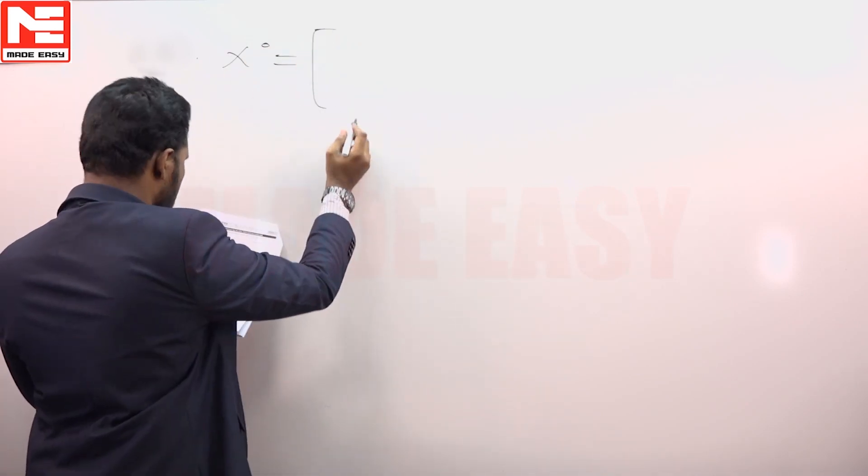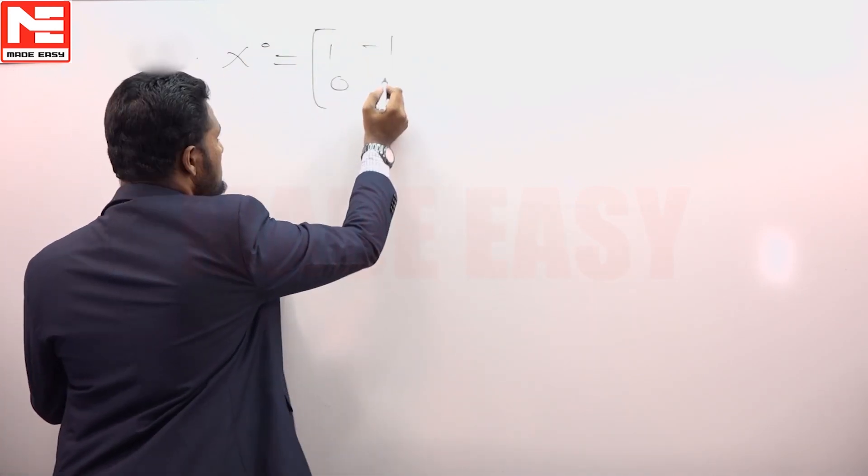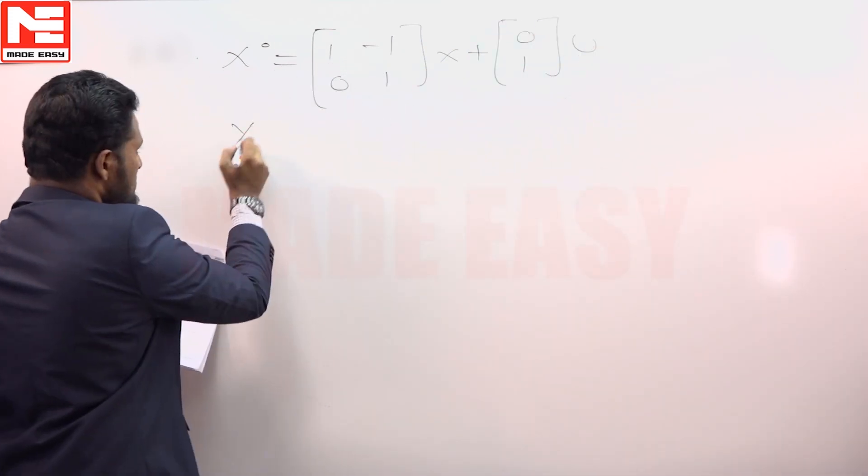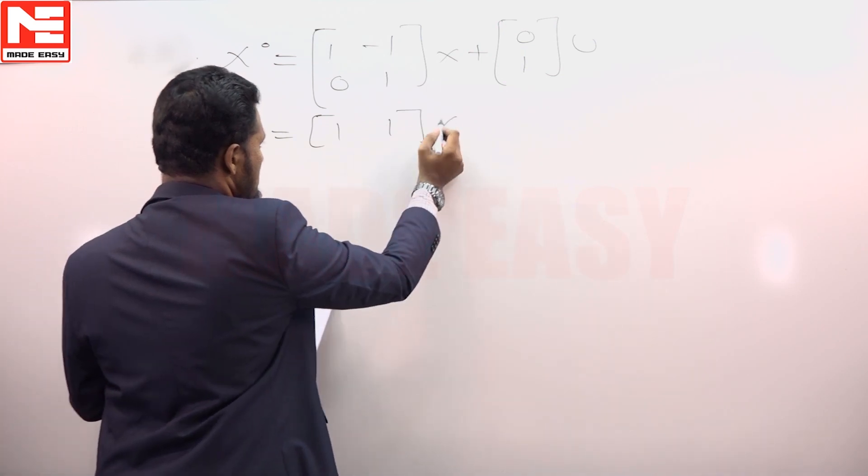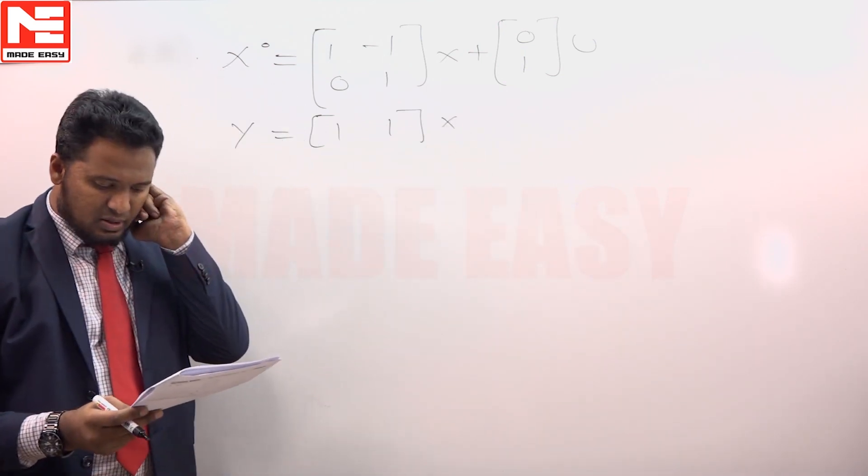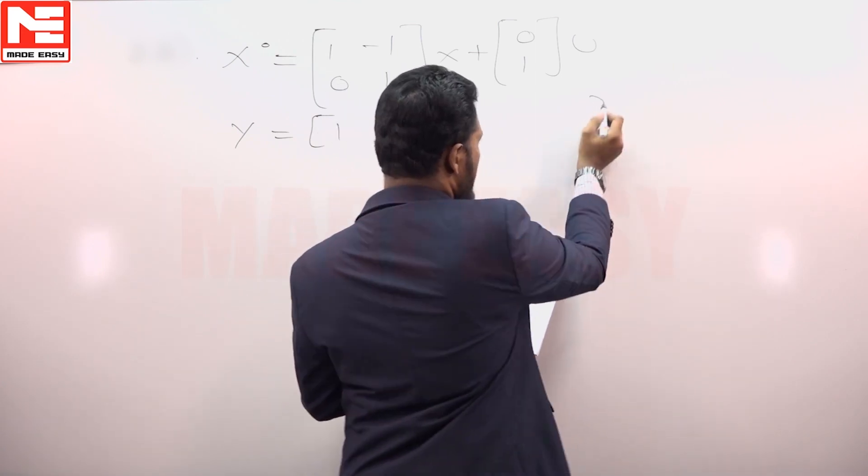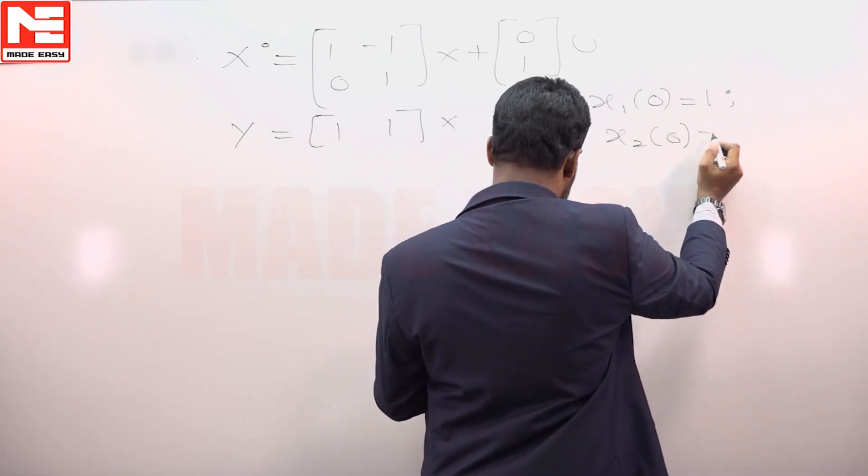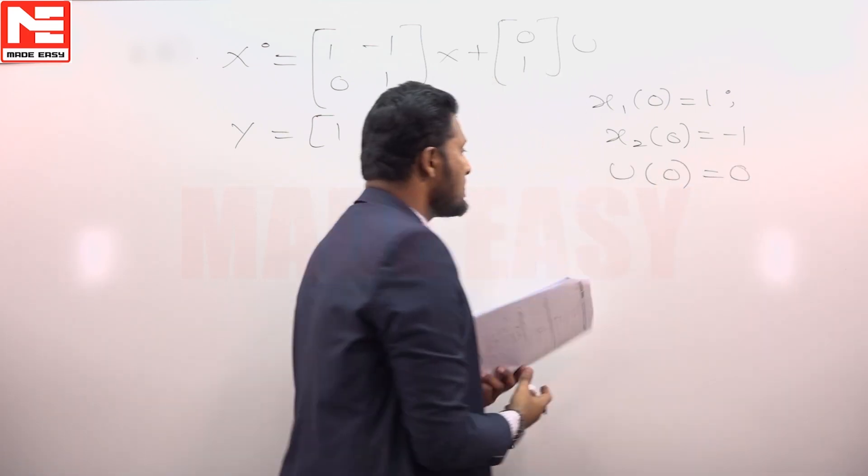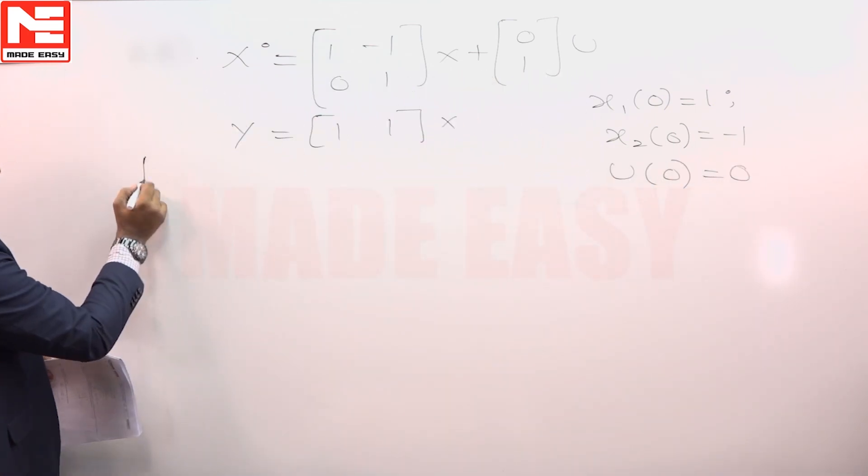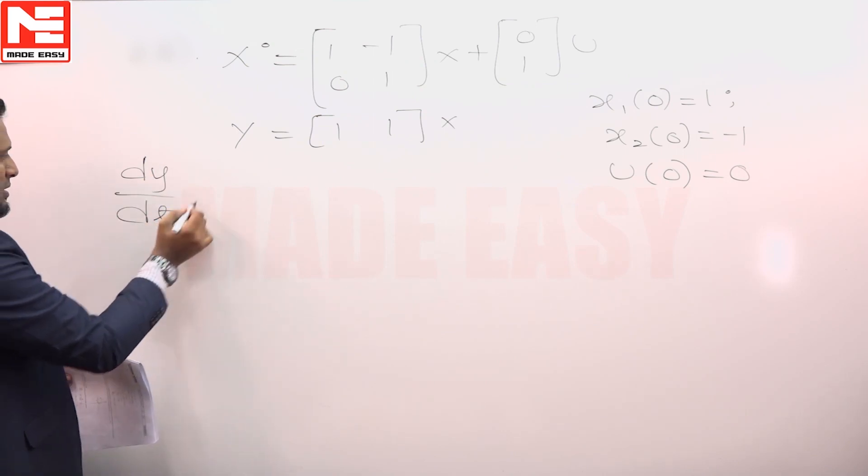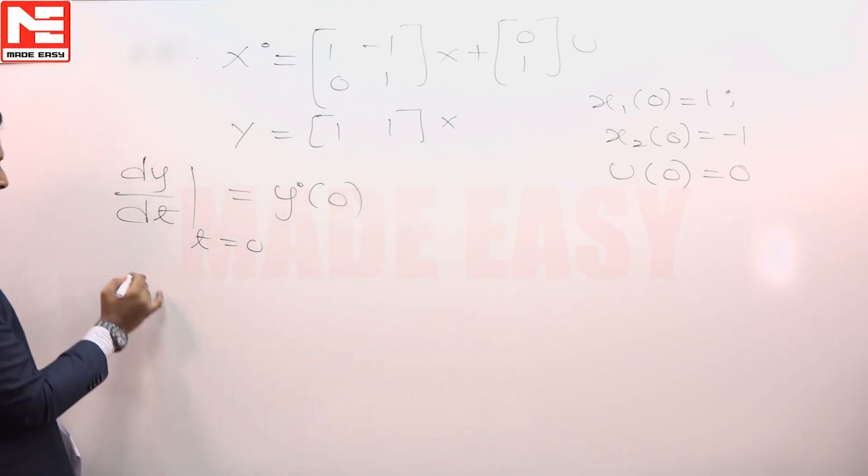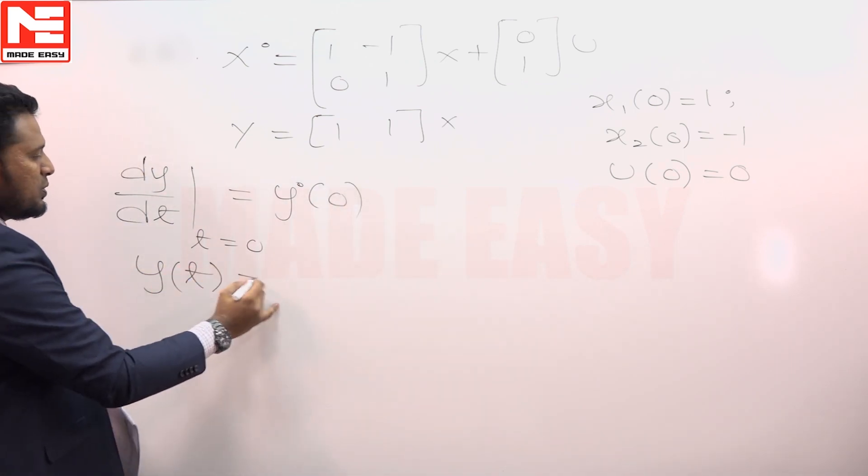State model representation of a system is given. The question is to find dy by dt. It is given that x10 is 1, x20 is minus 1, u is 0. We have to find dy by dt at t equals 0, that means y dot 0.